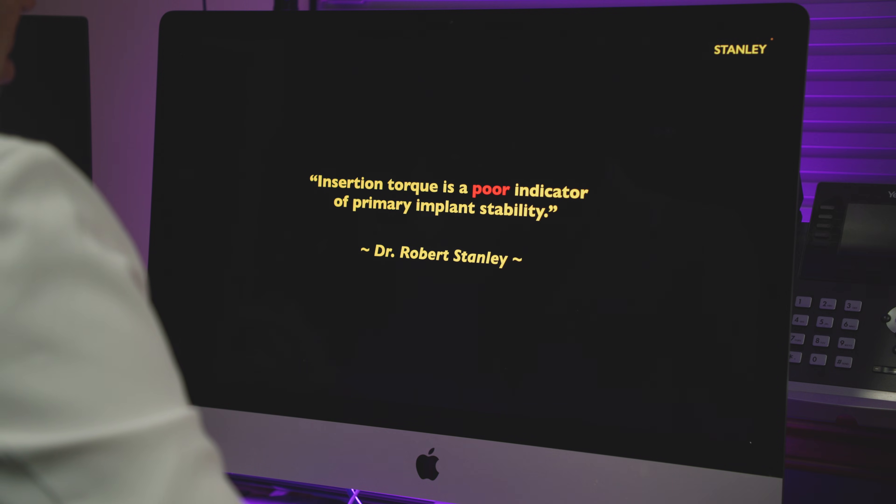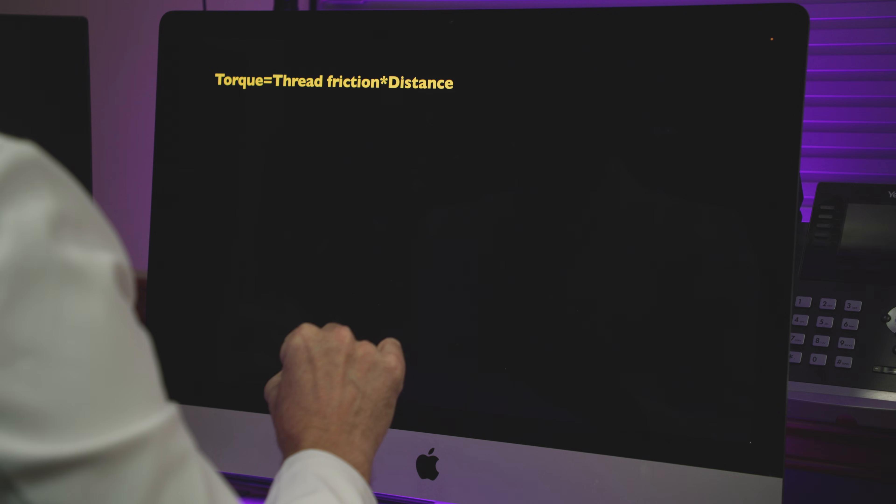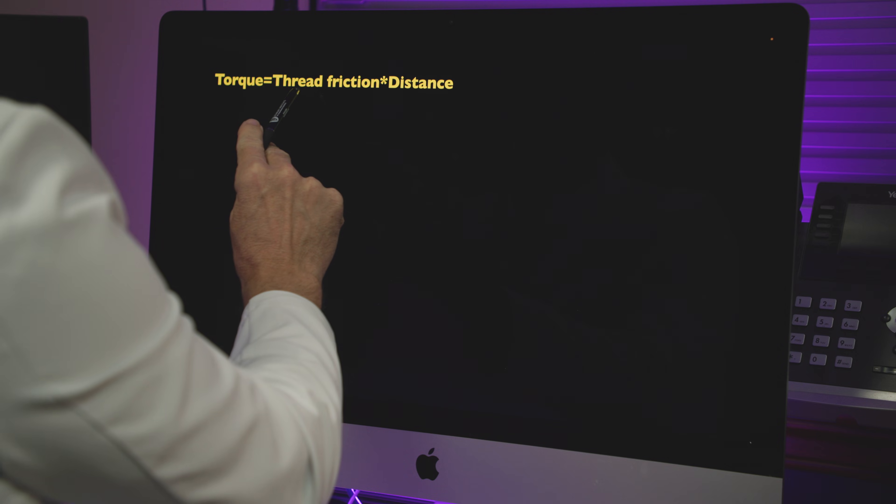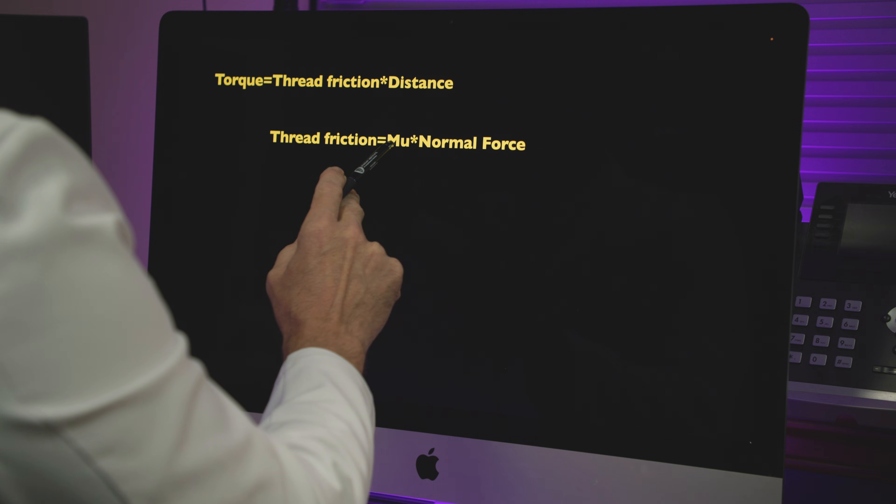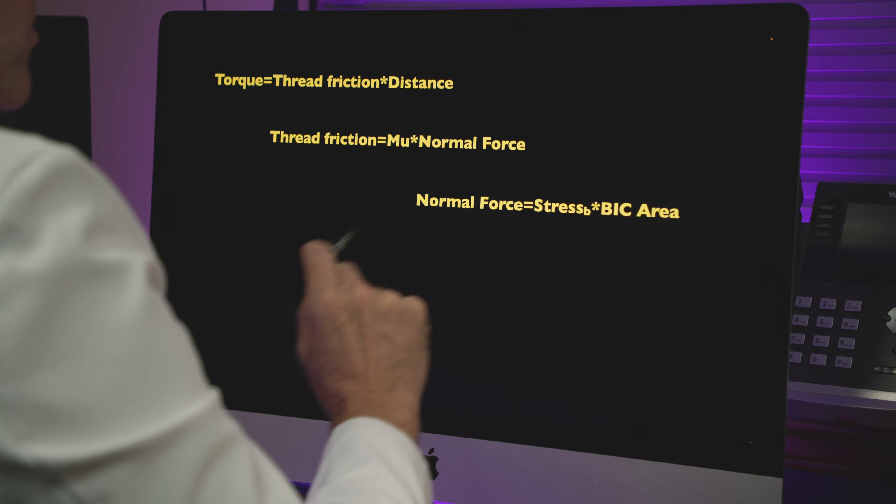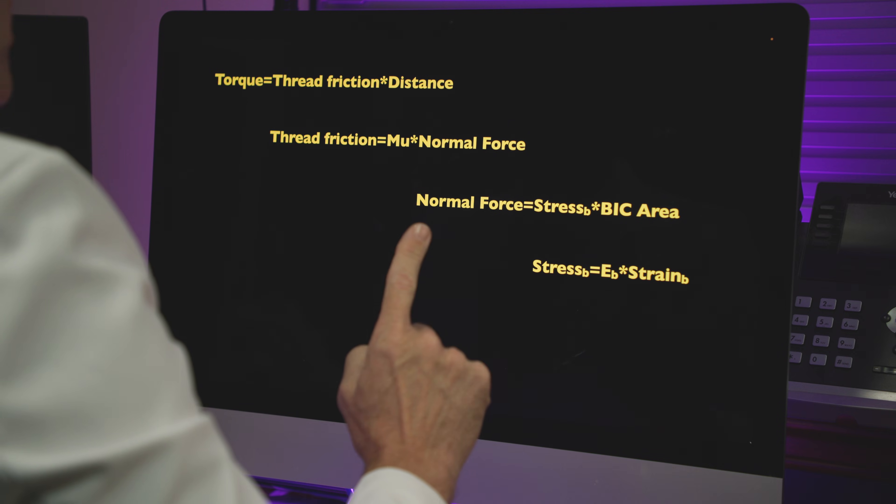Insertion torque is a poor indicator of primary implant stability. Here's an equation, and just bear with me because I'm going to summarize this really quickly in about 30 seconds. Torque is equal to the friction on the threads of the implant to bone and the distance of the device you're measuring. We know that the thread friction is equivalent to mu, which is a coefficient of friction, times the normal force. The normal force is equal to the stress on the bone times the bone to implant contact area, and the stress on the bone is equal to the modulus of elasticity of the bone times the strain of the bone. Now, don't turn me off yet. Watch.